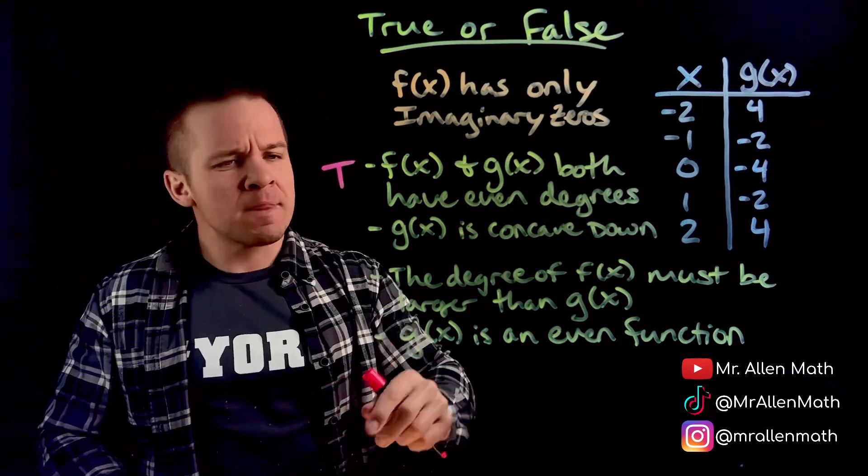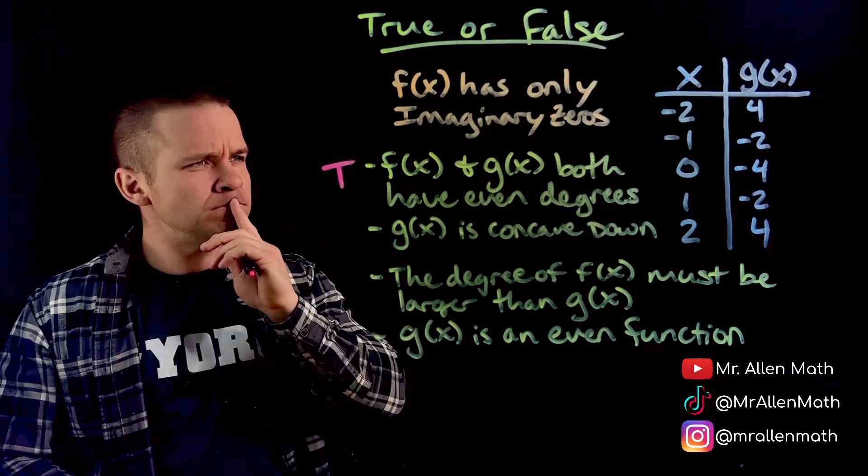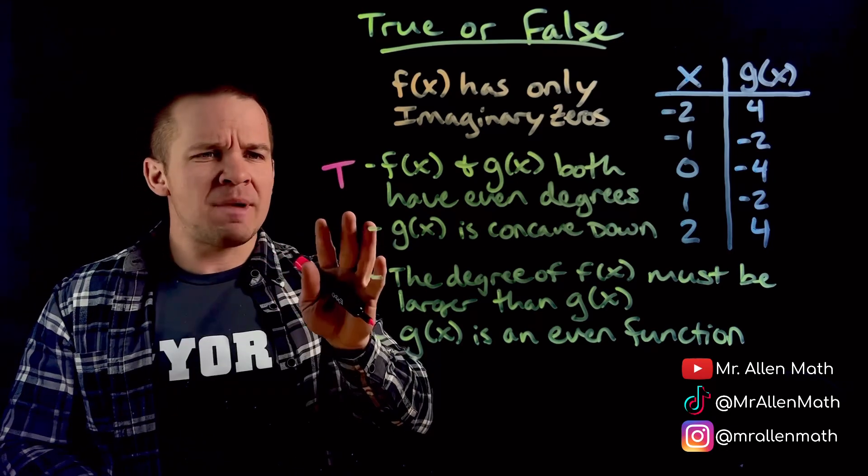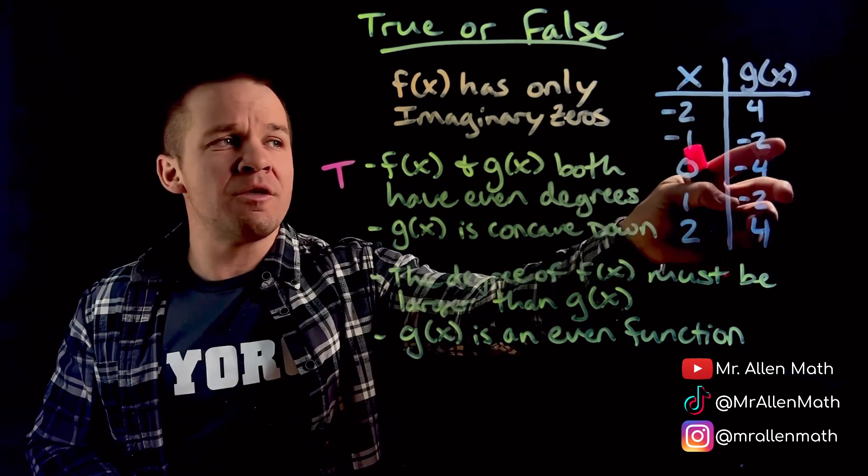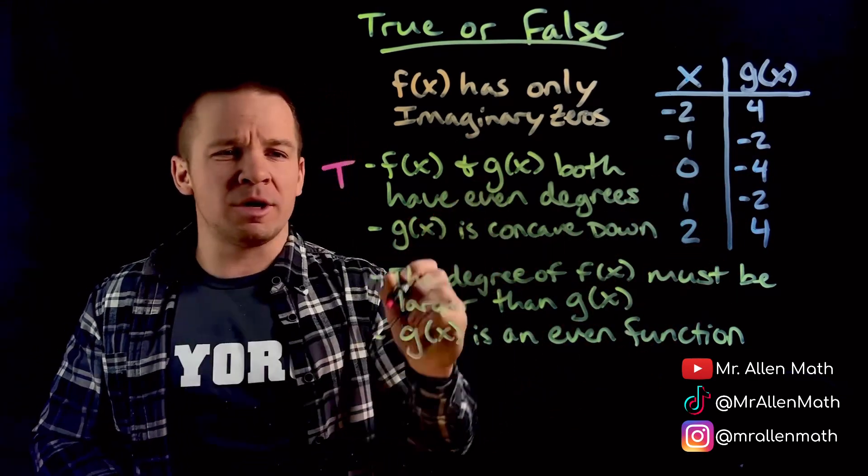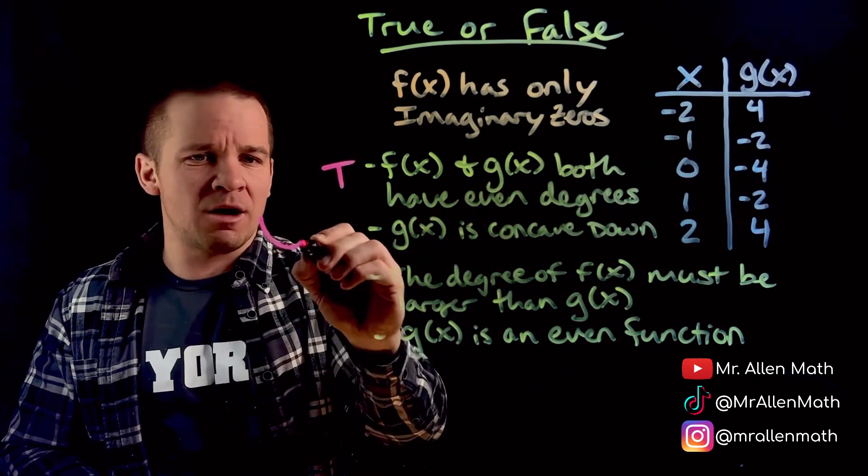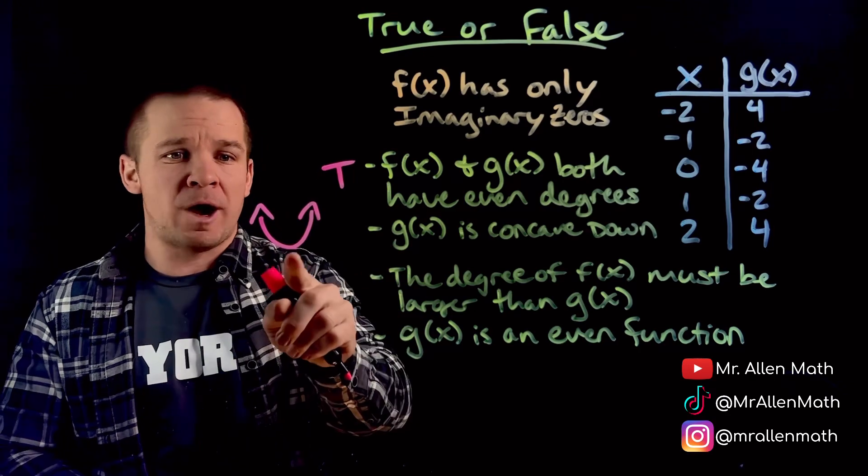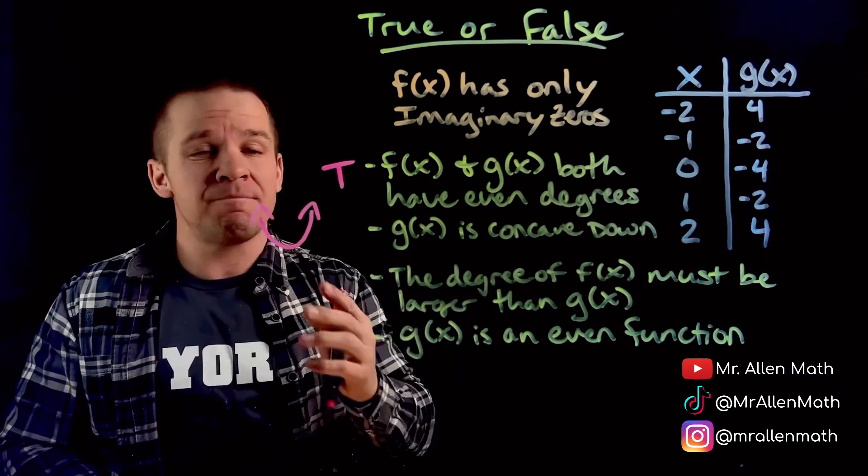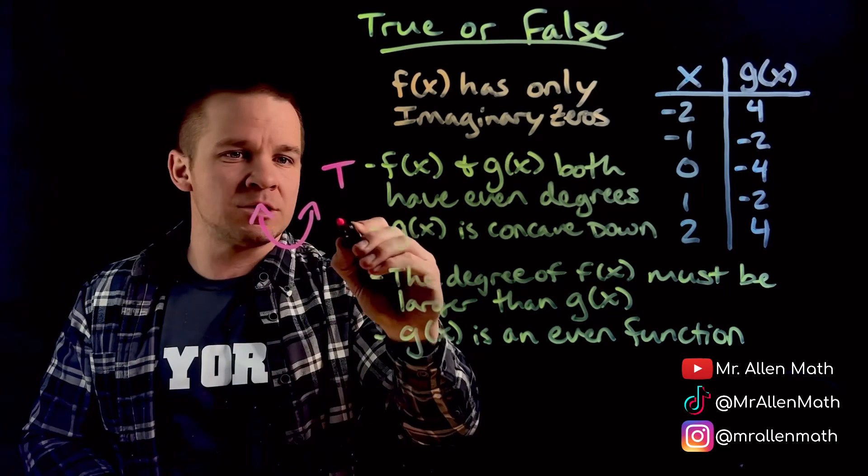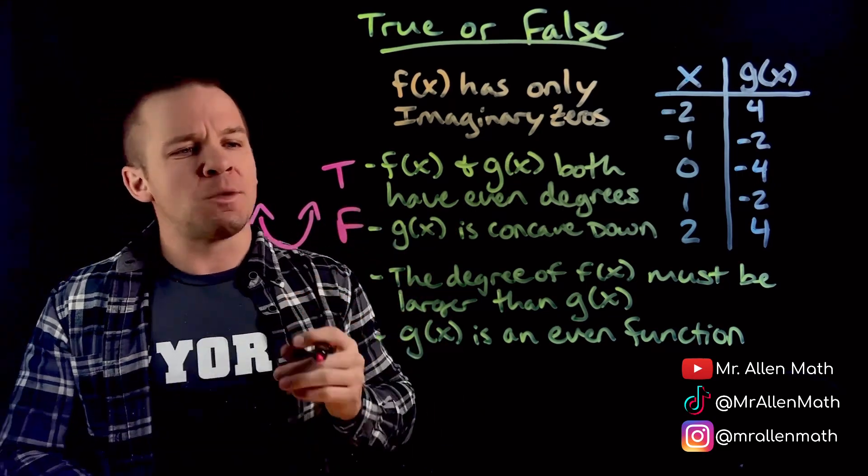All right, love it. Now, g of x is concave down. Let's see here. If my values, my y values, it looks like they start at the lowest here, and then they're only going up. So I'm probably looking more like this guy is going to be going up like that, up like a cup. Lowest value right there that looks to be my vertex, and then there's symmetry about that. So I think it's going to be concave up. So this one here is false.